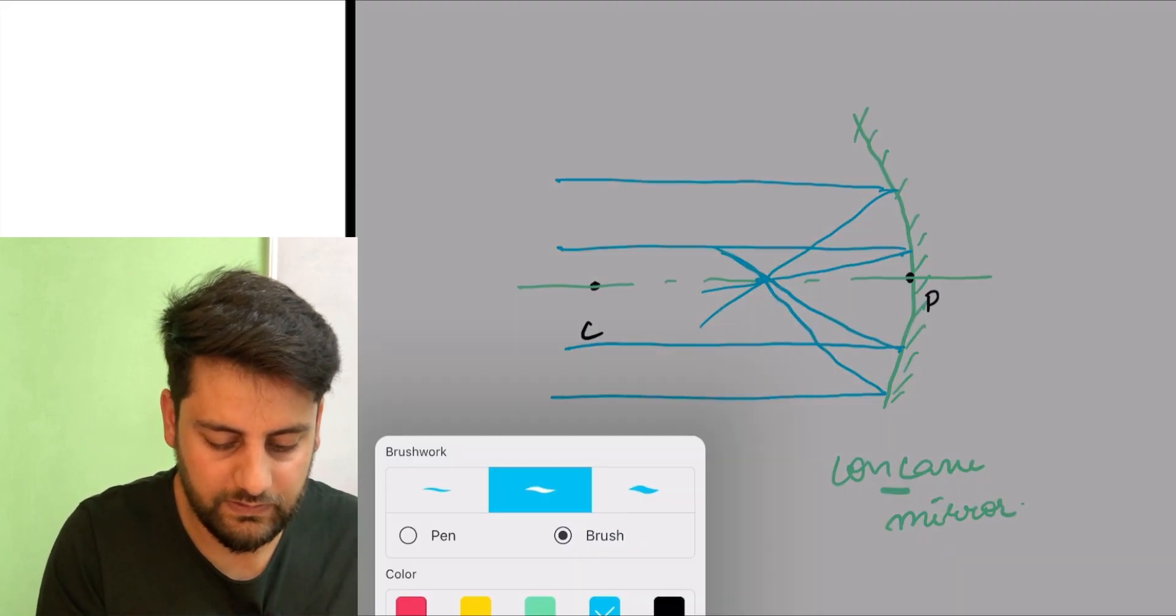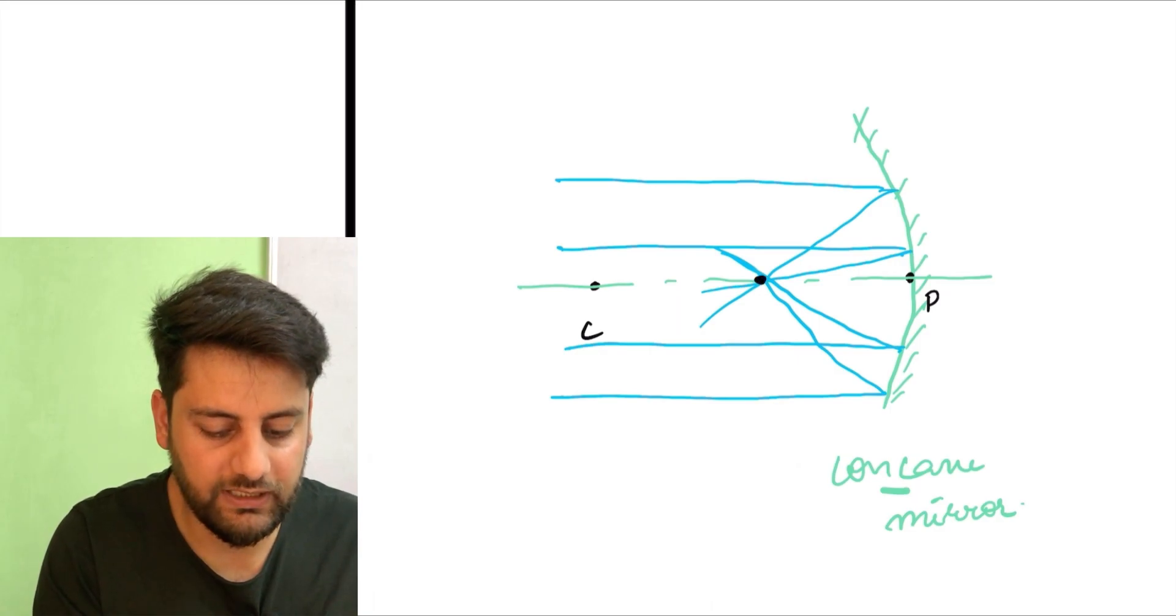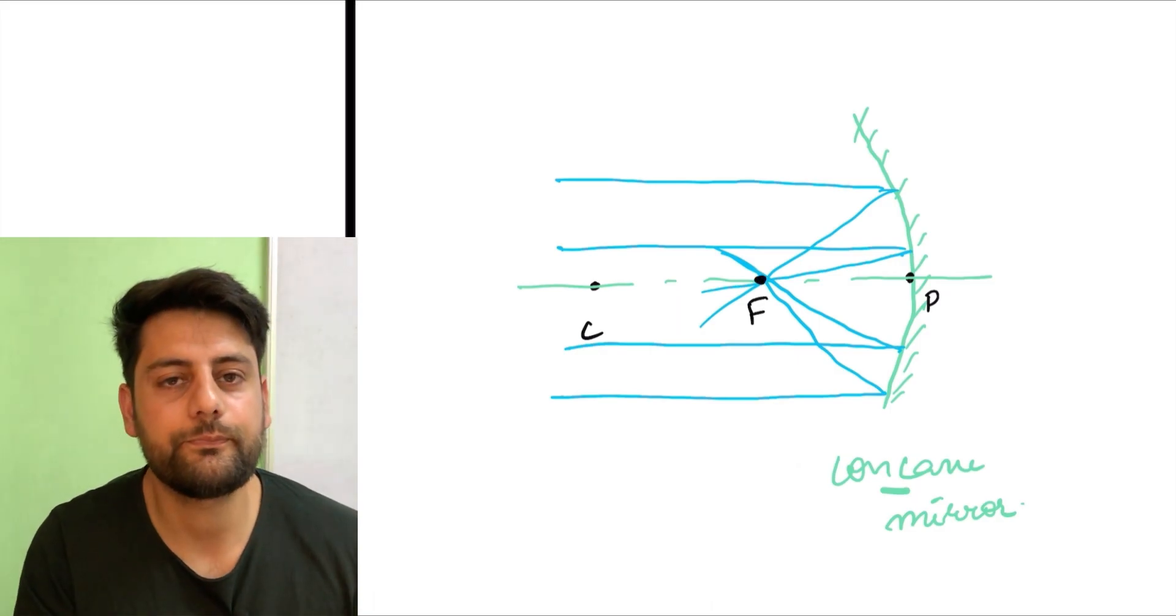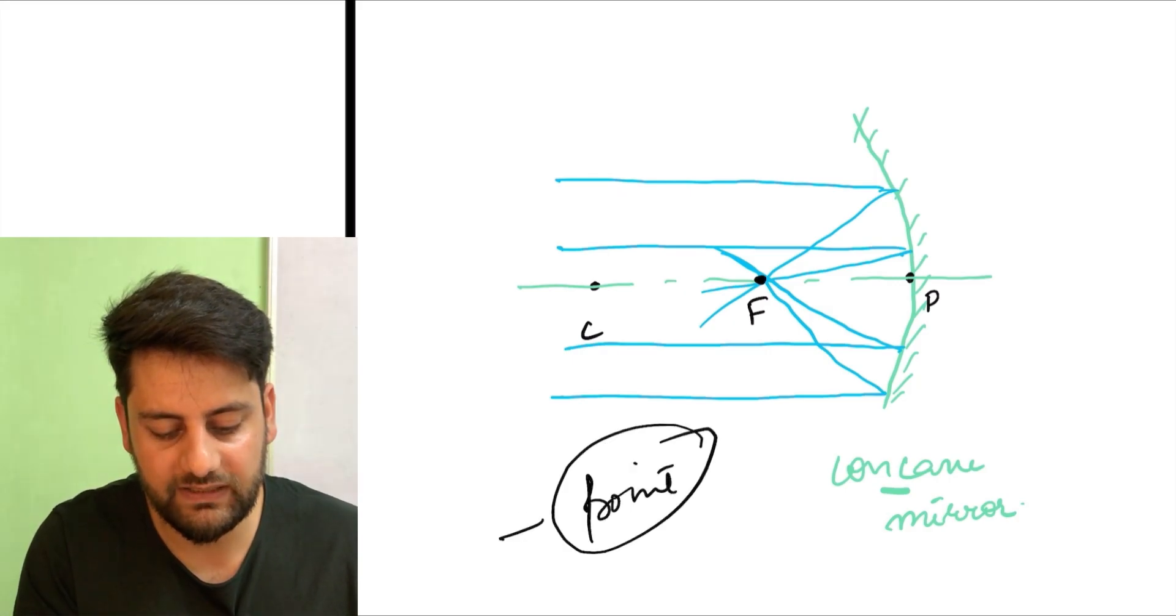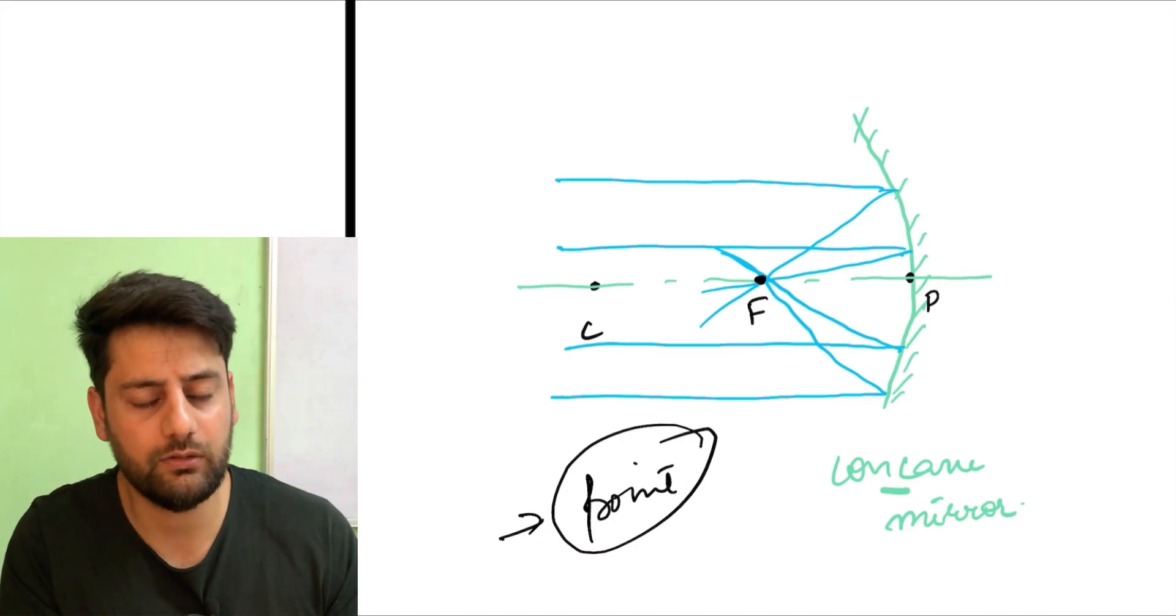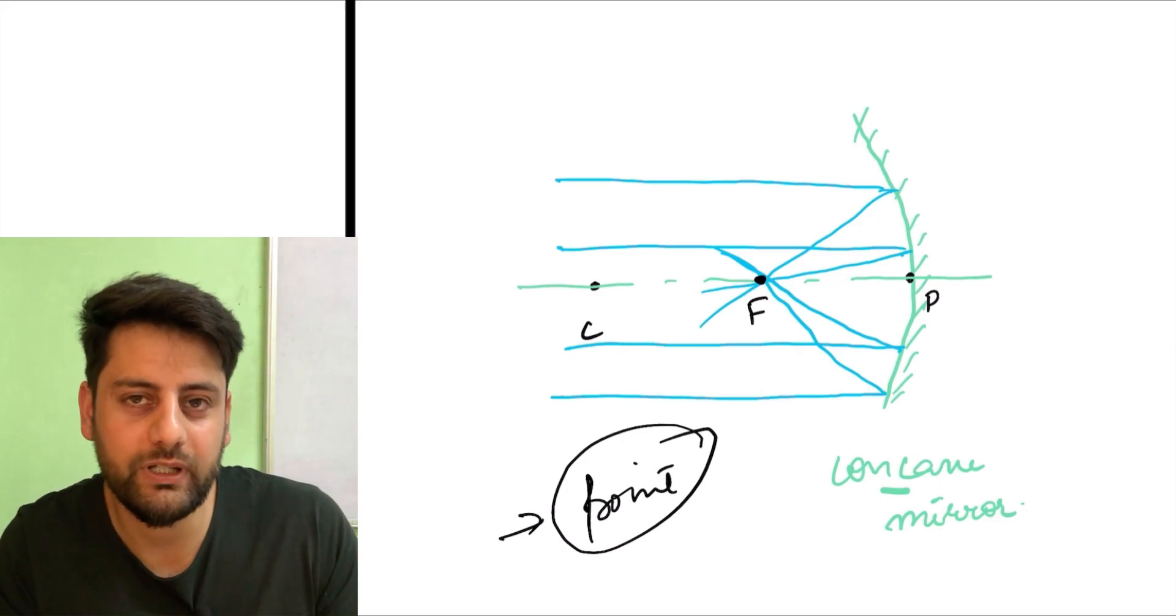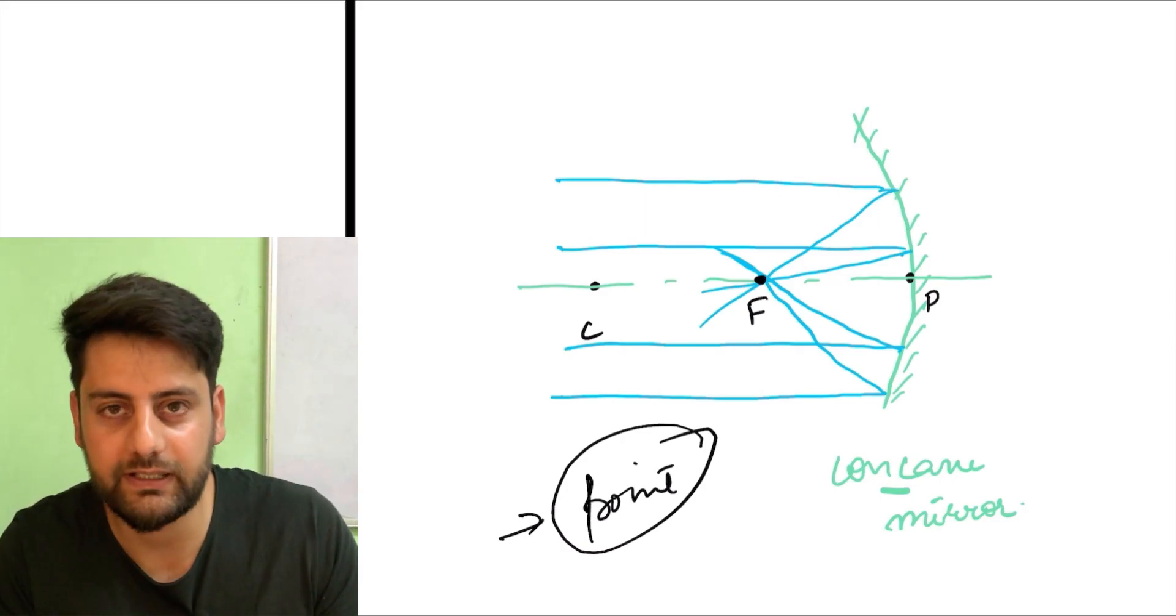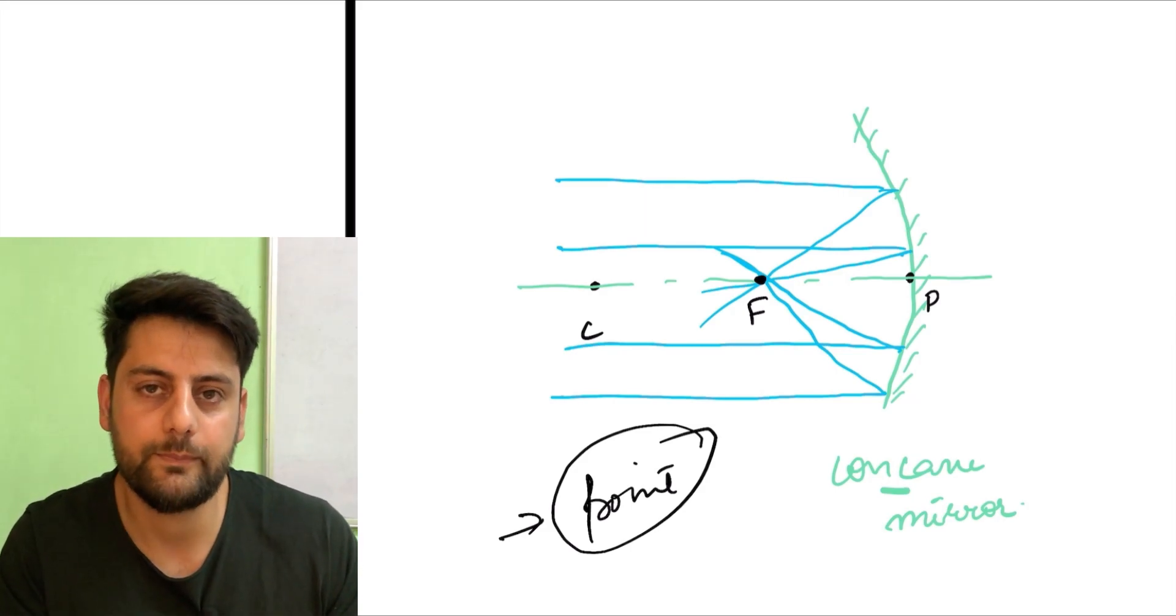Jahan pe ye light aake meet karegi, that point is basically known as my principal focus. So this point here, this is my principal focus. This is basically a point jahan pe ye saari lines converge karke meet karegi. Obviously they are not stopping there, they are going on their respective paths. But this is a point jahan pe ye ek dusre ko intersect karegi, meet karegi. But they are not stopping there, they are continuing with the journey.